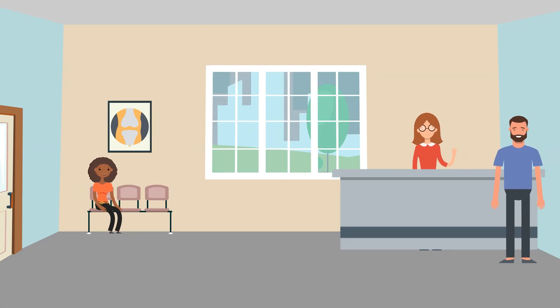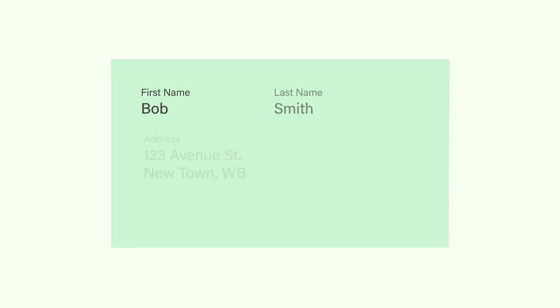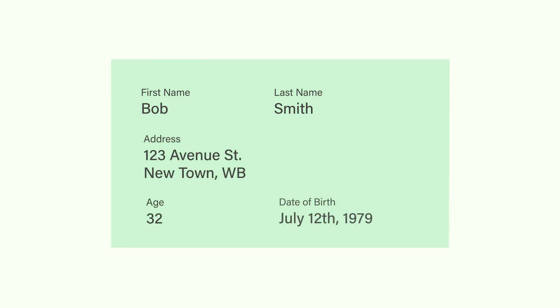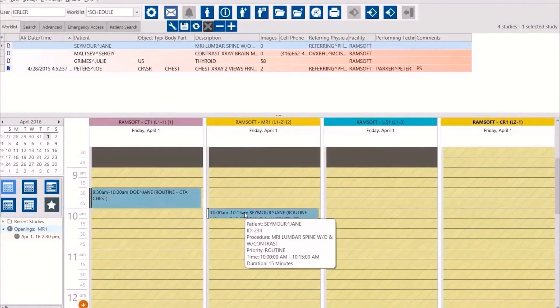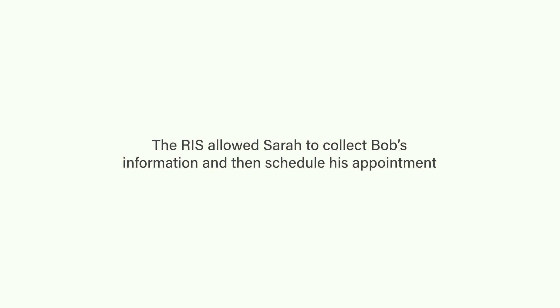The receptionist, Zara, helped him with that. This is where the RIS comes into play. She entered his information — like his first name, last name, address, age, and other patient data — in the system. Then she scheduled him for the next day at 2 p.m. by dragging and dropping Bob's info box into the scheduler calendar. In short, the RIS allowed Zara to collect Bob's information and then schedule his appointment.